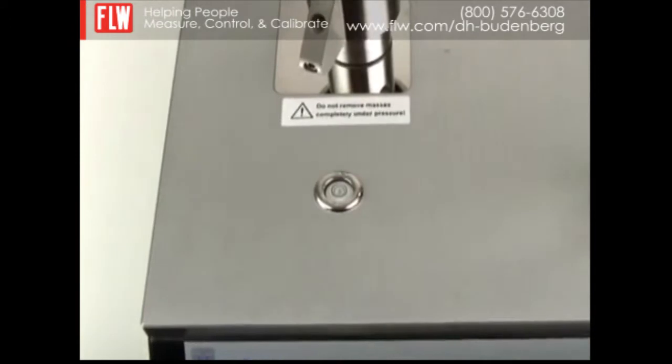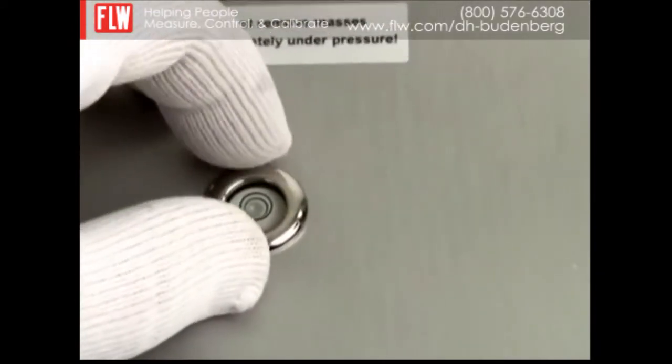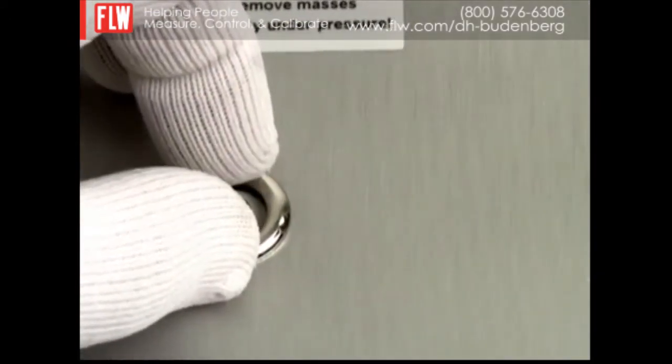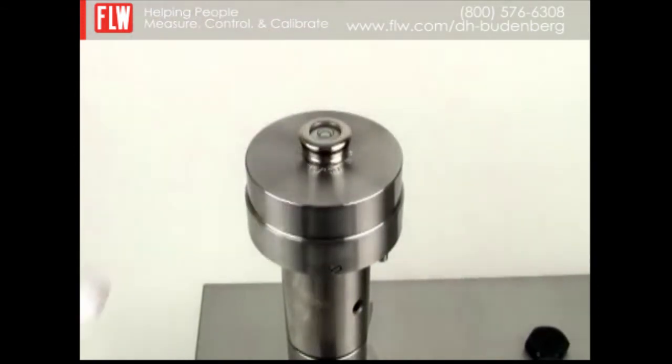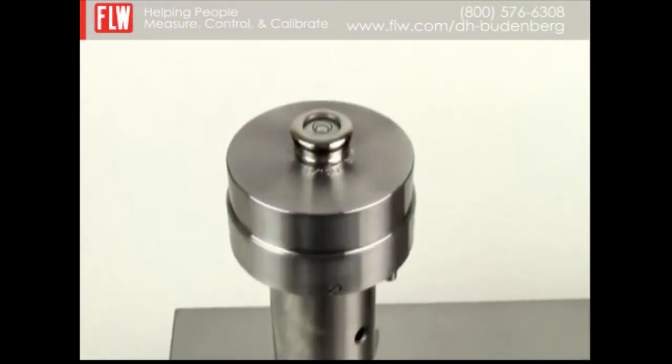Another great feature of the CPB 5800 is that the level can be removed from the base and placed right on top of the piston to ensure that the reference level offset is minimized.